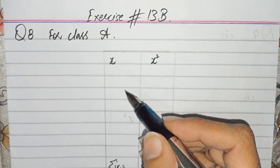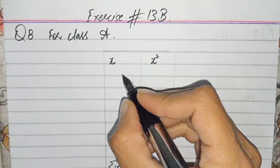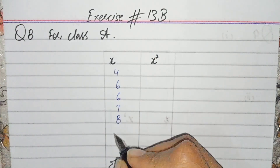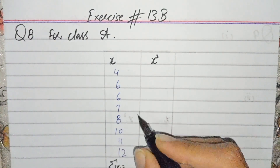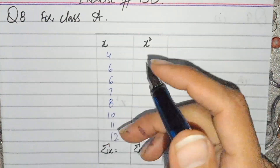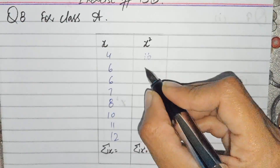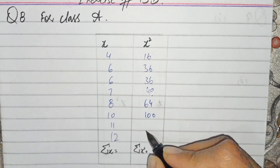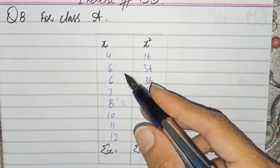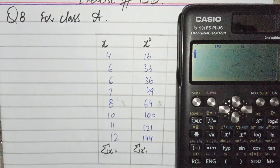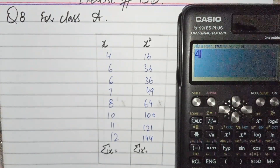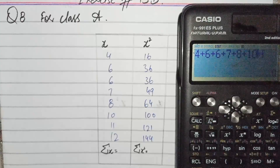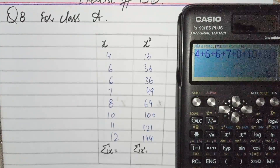For Class A, the data values (x) are: 4, 6, 6, 7, 8, 10, 11, and 12. The squared values (x²) are: 16, 36, 36, 49, 64, 100, 121, and 144. The sum of x is 4 + 6 + 6 + 7 + 8 + 10 + 11 + 12 = 64.